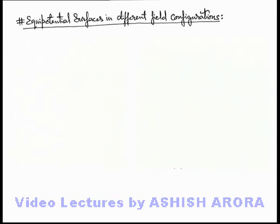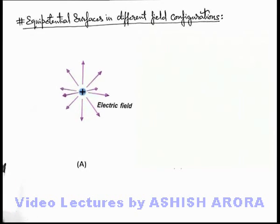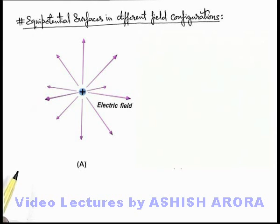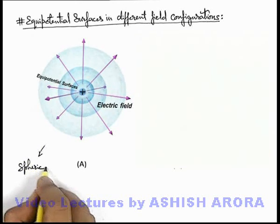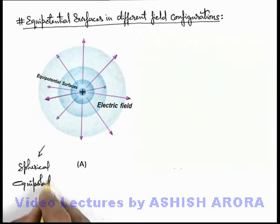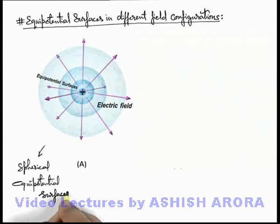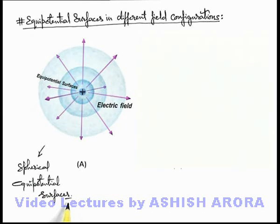In continuation, let's discuss equipotential surfaces in different field configurations. If there exists just a point charge, we know that in the surrounding of a point charge the electric field exists in the radially outward direction. You can see these are the electric lines of forces away from the positive charge. If we consider a surface at every point of which the electric field is normal, you can see there are concentric spheres — these are spherical equipotential surfaces which exist in the surrounding of a point charge.